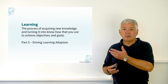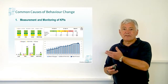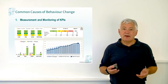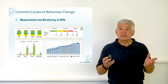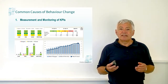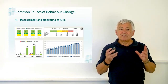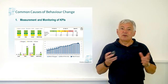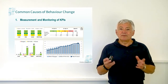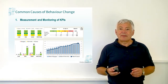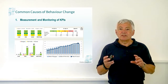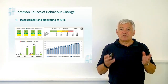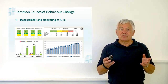The first of our common causes of behaviour change is measurement, monitoring and KPIs. If something is not measured, it can't be managed. If you don't measure the things you do, you won't know if you are doing things consistently. And without monitoring measurements, you won't know which things are contributing most to your results.